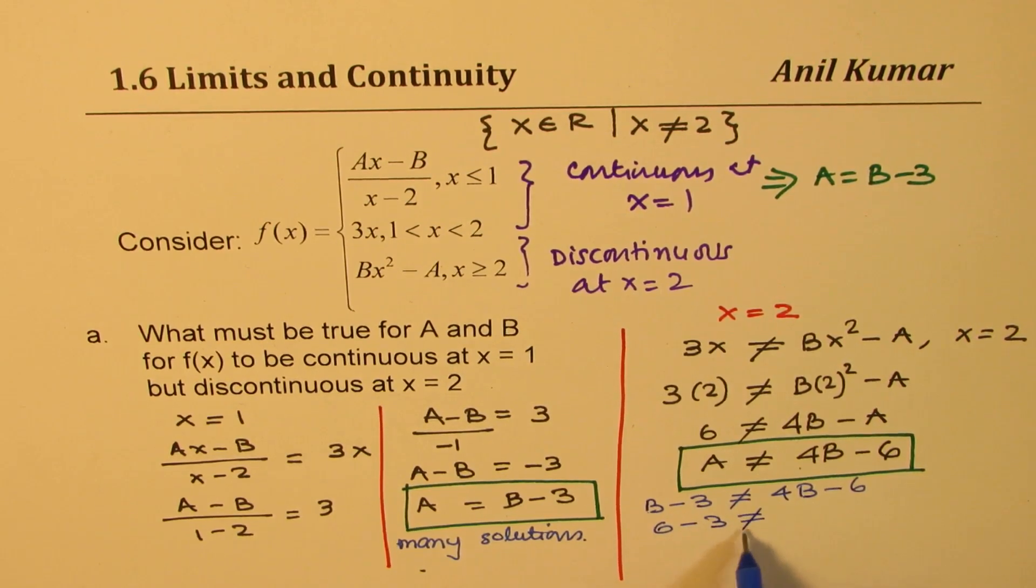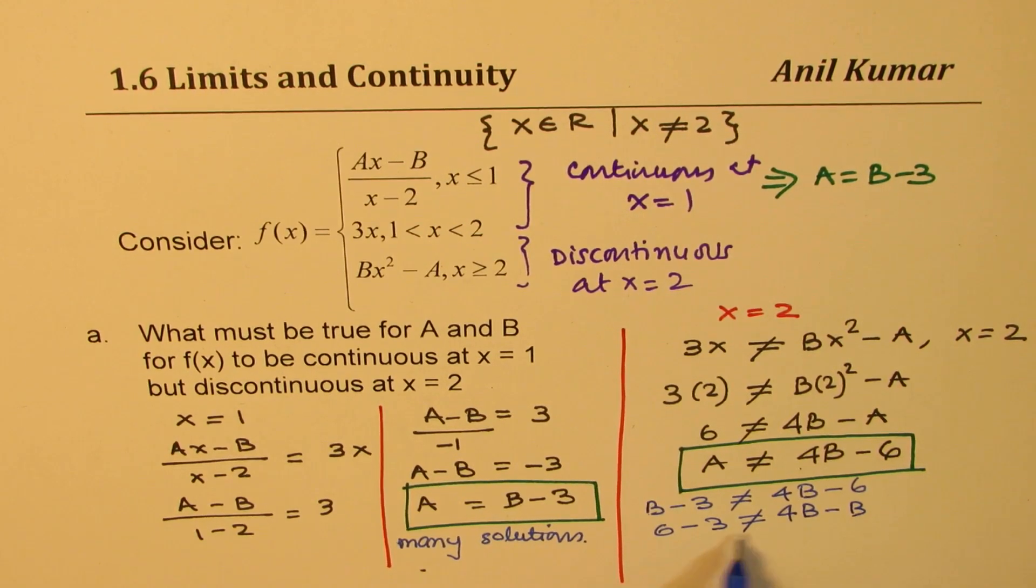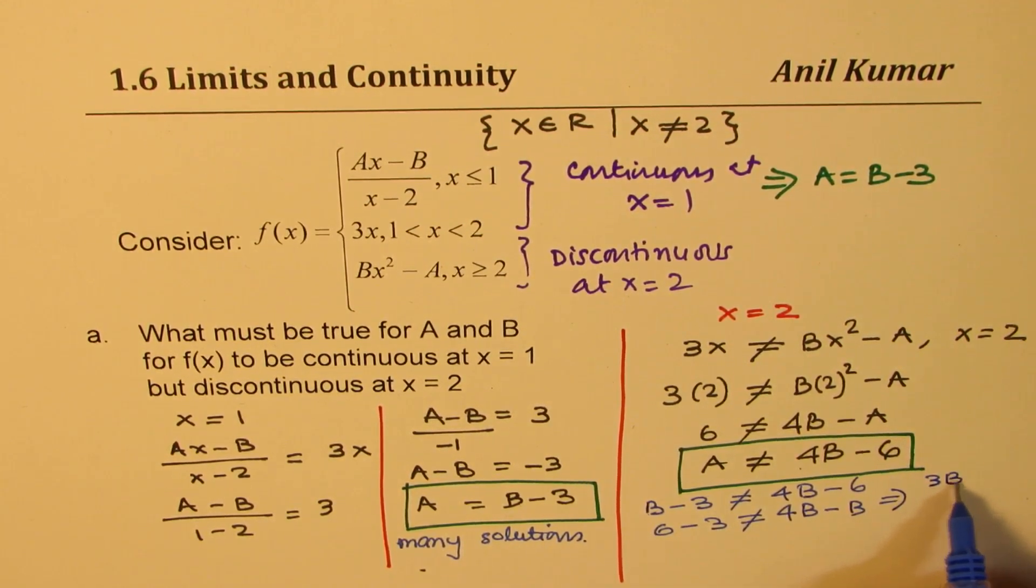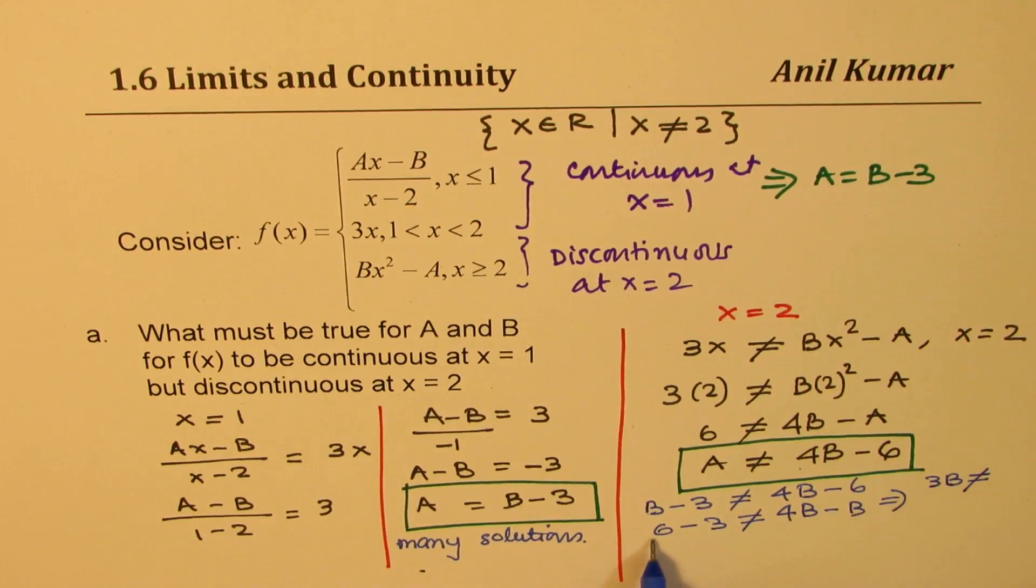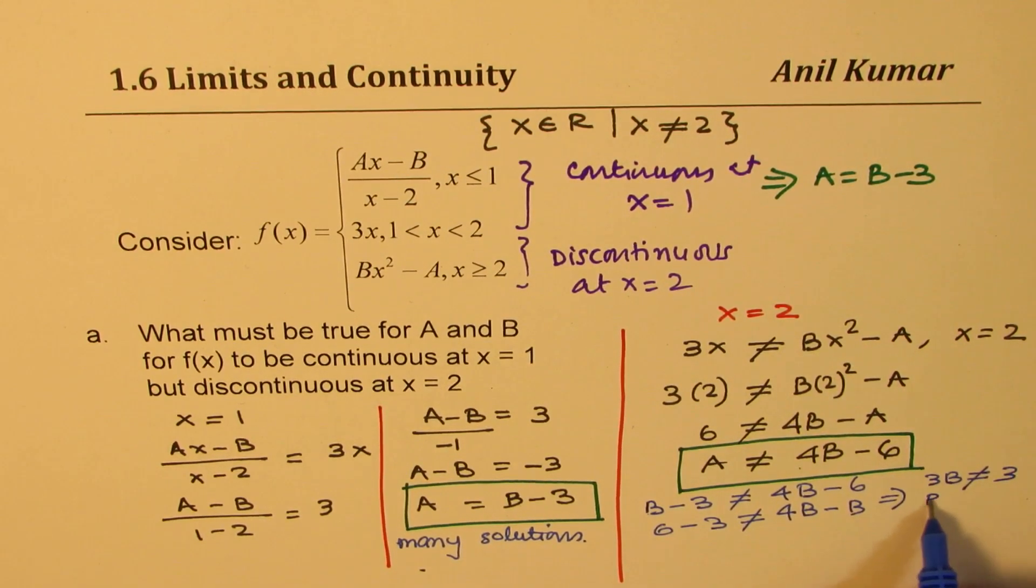So that is 3. So that gives you that 3B is not equal to 3, or B is not equal to 1. So we have a condition that B is not equal to 1.